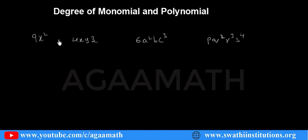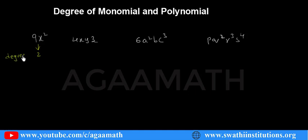So what is the degree of a monomial? It means the highest power of the variable. Here we have only one variable. What is the power of this variable? It is 2. So the degree of this monomial 9x² is 2.